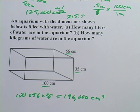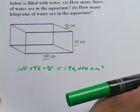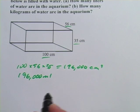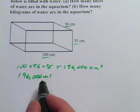Which means, let's give myself a little more room here, which means we have 196,000 milliliters because cubic centimeters are the same thing as milliliters.